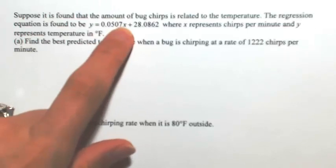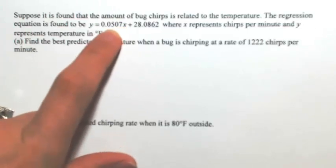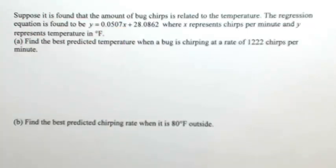Okay, and then for every chirp per minute, it's going to go up by 0.057. So let's answer the following two questions. Let's find the best predicted temperature when a bug is chirping at a rate of 1,222 chirps per minute.